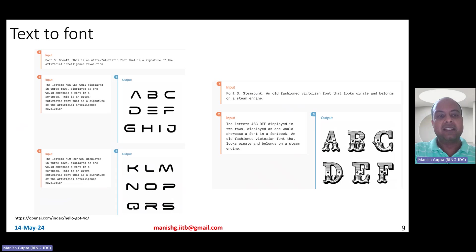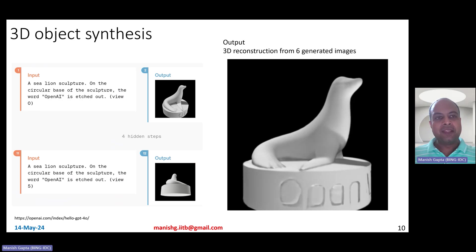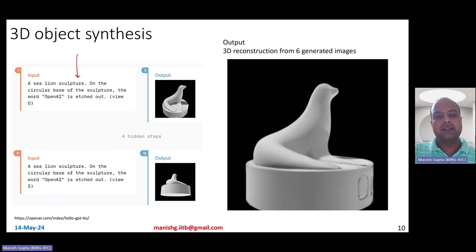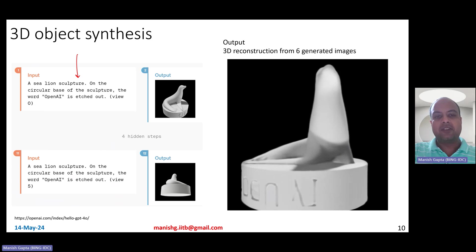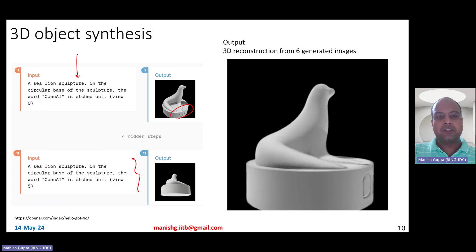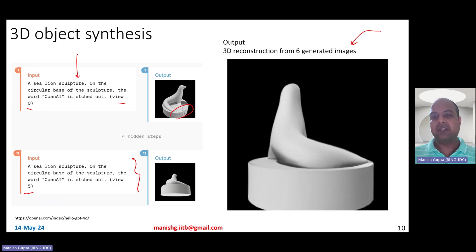It can create novel fonts — you can specify in text different details about a font, like it should denote the AI revolution, and ask it to return the alphabets as they would appear in this new font. There's also a steampunk font — an old-fashioned Victorian font that looks ornate and belongs on a steam engine. You can do 3D object synthesis with GPT-4O — give it a prompt like a sea lion sculpture with the word OpenAI edged on its circular base, generate six views, and then ask it to do a 3D reconstruction from those six generated images.